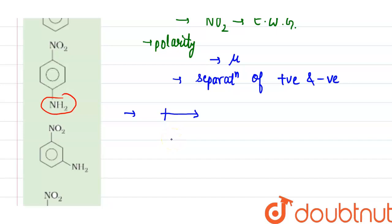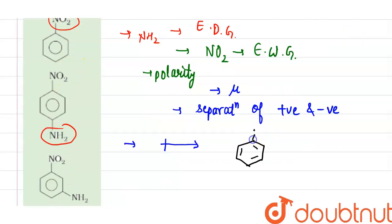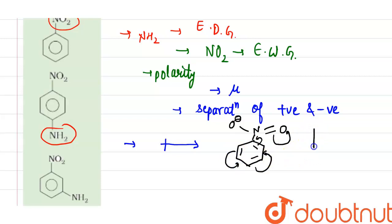First we see that the first compound is nitrobenzene, with a double bond O and O negative. The electron density shifts towards this side, so the overall dipole moment shifts towards this side. In nitrobenzene, NO2 is present on the ring, which is an electron-withdrawing group, hence the electron density will move towards the NO2 group.